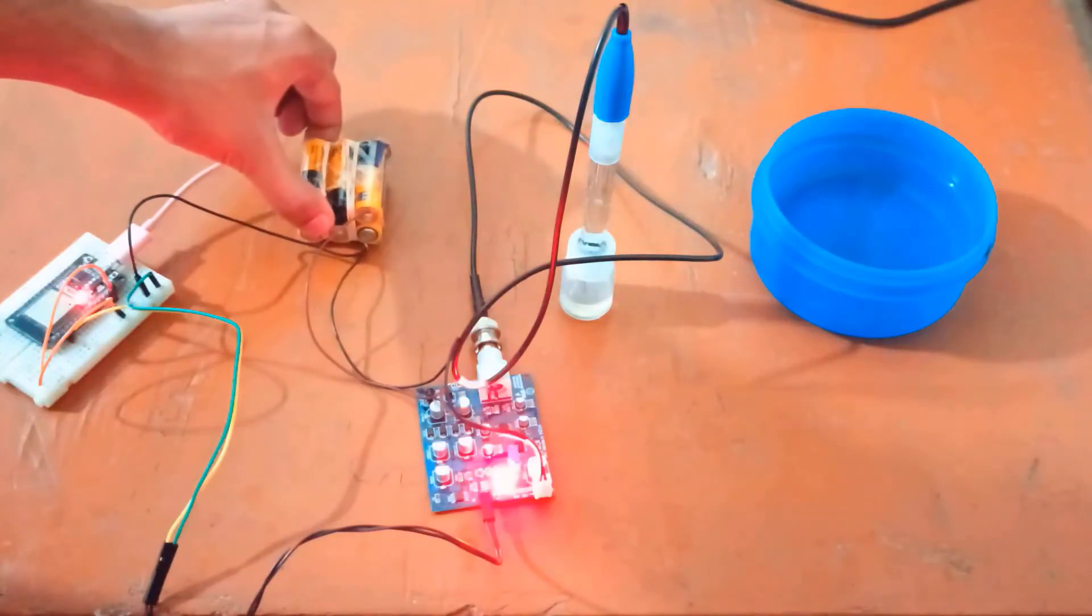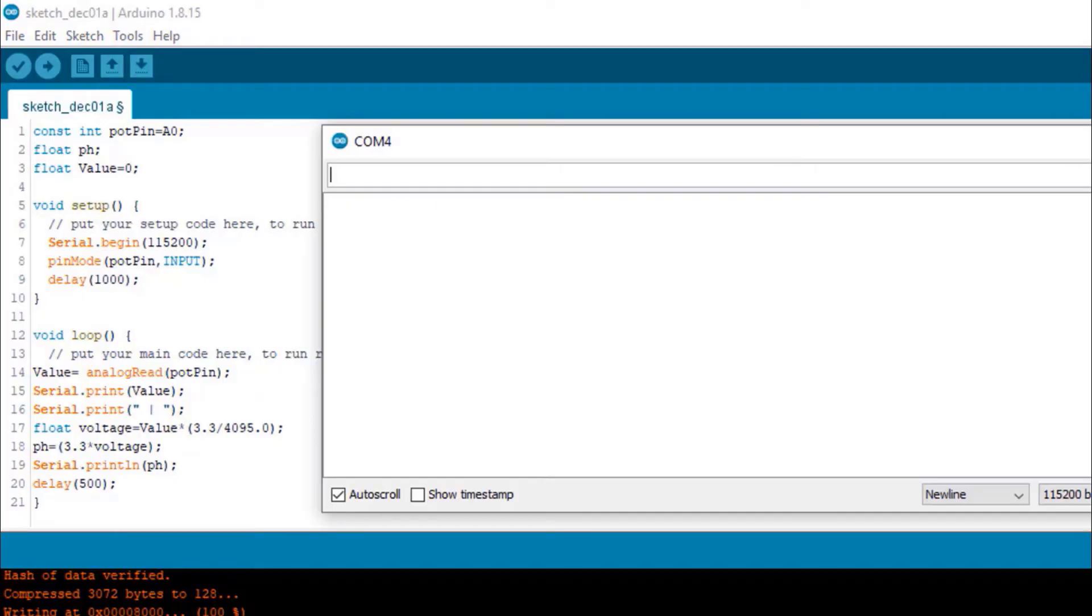After uploading the code, you can now open your serial monitor. Here we are getting the pH value around 4. This is the value you will get when the electrodes are dipped in a storage solution.